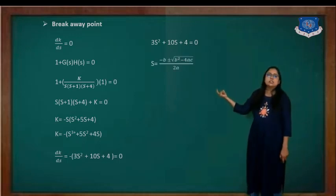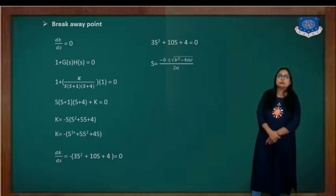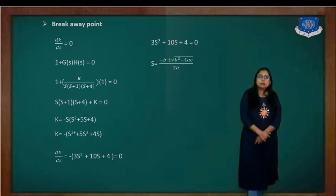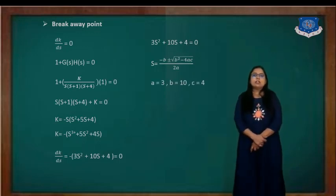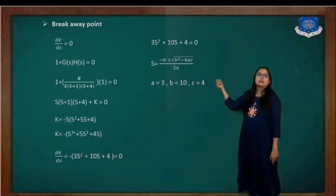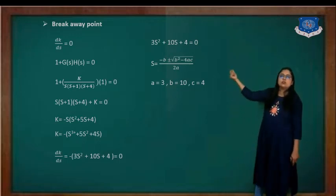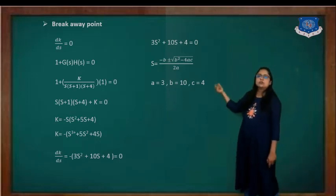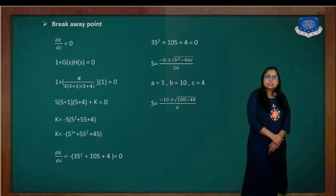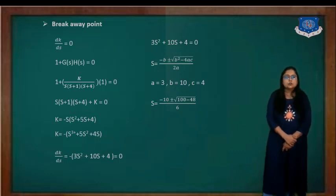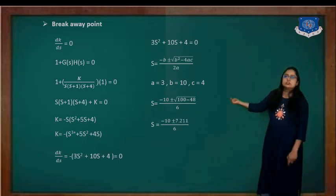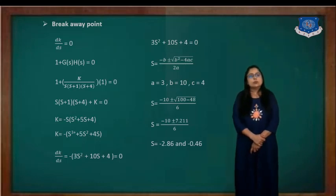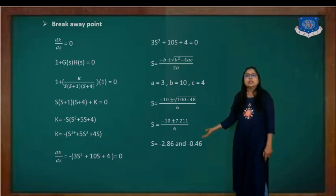We use the quadratic formula S equal to minus B plus or minus root of B squared minus 4AC divided by 2A, where A is the coefficient of S squared, B is the coefficient of S, and C is the constant. Substituting: S equal to minus 10 plus or minus root of 100 minus 48, divided by 6. Solving this gives S equal to minus 0.86 and minus 0.46. These are the breakaway points.